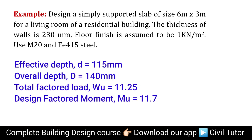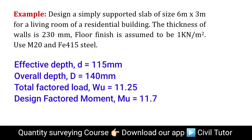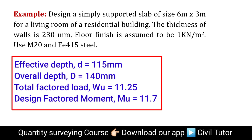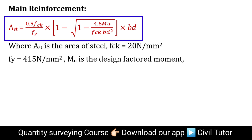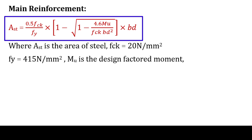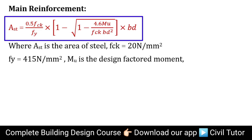We have the given data: a one-way slab of dimensions 6m × 3m is to be designed using M20 grade of concrete and Fe415 steel. The depth of slab, load calculation, and design factored moments have already been calculated in our previous lecture, which you can find in the description box. To design the main reinforcement, we have the formula: AST = 0.5 × FCK/Fy × [1 − √(1 − 4.6Mu / (FCK × B × D²))] × B × D.